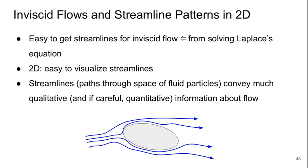Let's talk about inviscid flows, or flows without friction, and streamline patterns in 2D. It's very easy to get the streamlines for inviscid flow from solving Laplace's equation, and in 2D it's easy to visualize the streamlines. The streamlines are the paths through space that the fluid particles take, and they convey a lot of qualitative and, if you're being careful, quantitative information about the flow field. This is the same picture I showed earlier of some cartoon streamlines. Of course, in inviscid flow we wouldn't have flow separation.